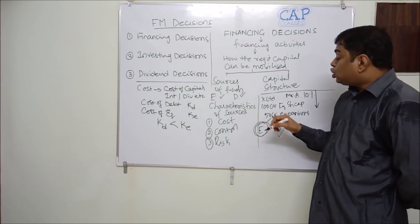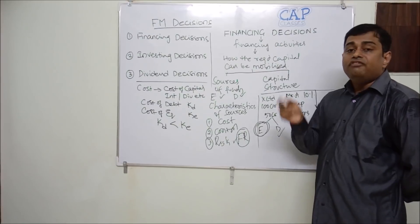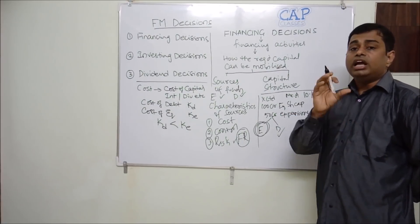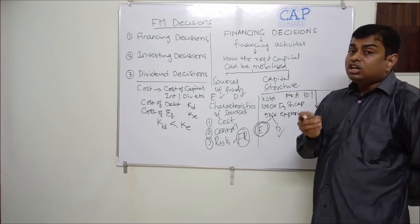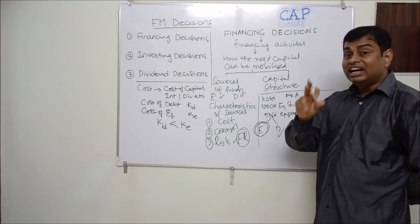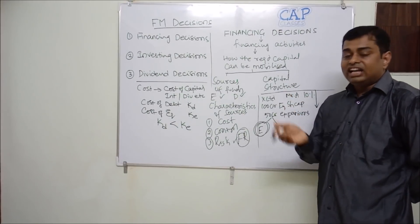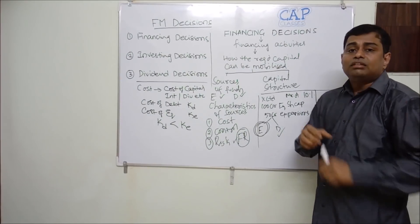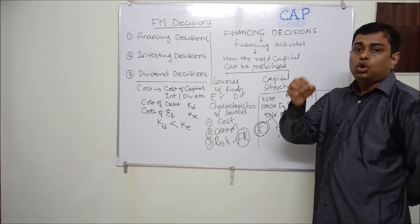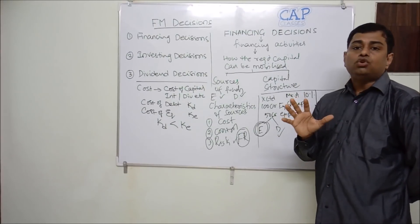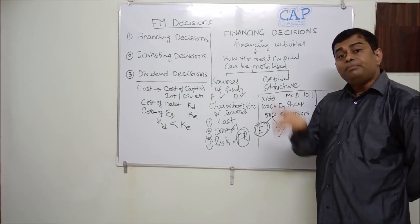However, when you issue debt, control is not diluted but there is another risk called financial risk to equity shareholders. More debt leads to more interest payment, as interest is a fixed financial cost — it creates financial risk. To some extent debt works positively, but beyond that it works negatively. Debt is like salt in food: sufficient salt makes a dish tasty, but too much salt spoils it. Similarly, debt to some extent increases the earnings of the company, but beyond a point it creates financial risk and stress.